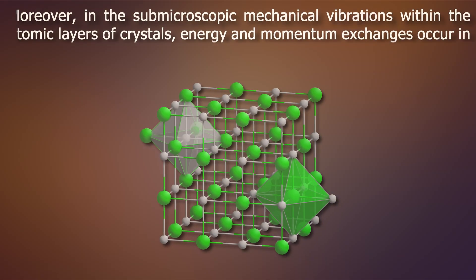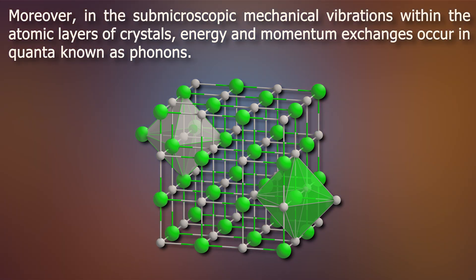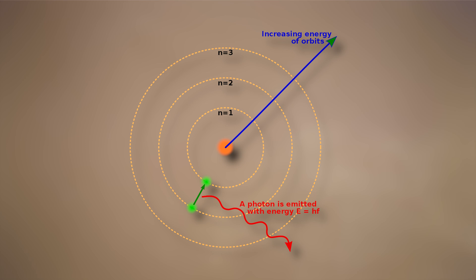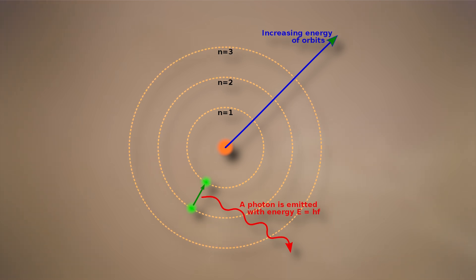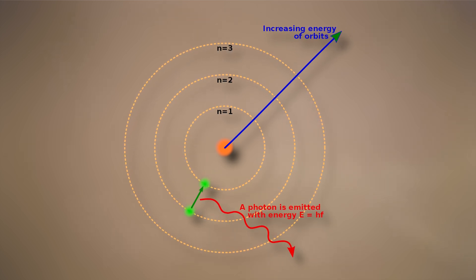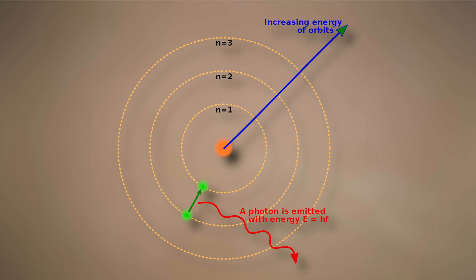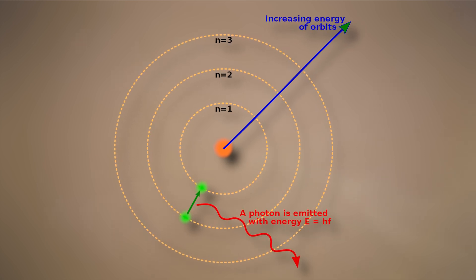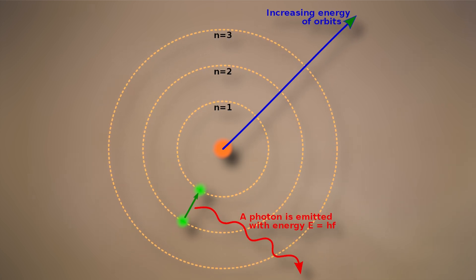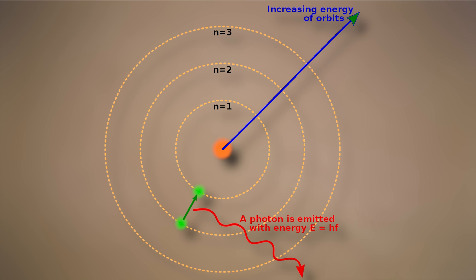Moreover, in the sub-microscopic mechanical vibrations within the atomic layers of crystals, energy and momentum exchanges occur in quanta known as phonons. Similarly, the energy of an electron confined within an atom is quantized and can only occupy distinct predefined levels. The total energy including both the kinetic and potential energy of the electron in its specific energy state or orbital within the atom is quantized. Atoms and matter in general remain stable because electrons are restricted to discrete energy levels within an atom.